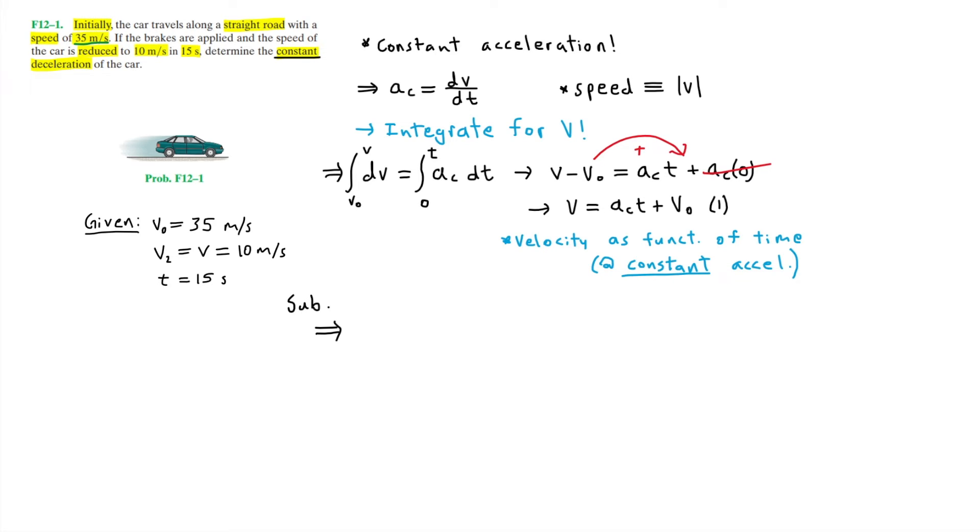And our velocity V of 10 meters per second and our time T of 15 seconds. So now plugging in these values into our equation, we have 10 meters per second equals A sub C times 15 seconds plus 35 meters per second. And here we are solving for A sub C.